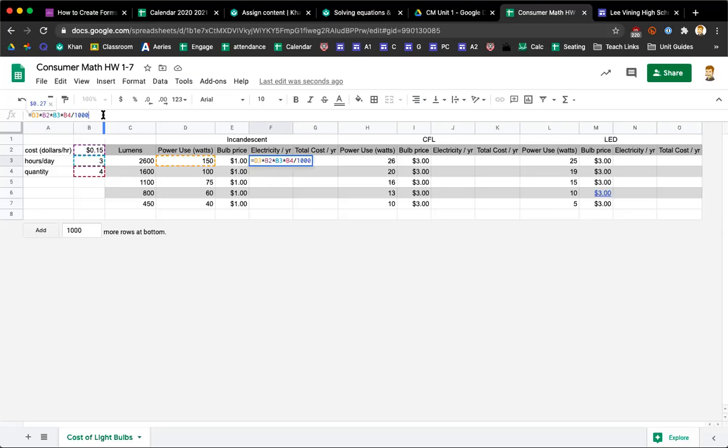We want to make this per year because per day is kind of hard to think of cumulatively. So we need to multiply by the number of days per year. Times 364.24—you could say 365 if you want to round. Enter, and I got $98.34 using inputs three hours per day, quantity four.